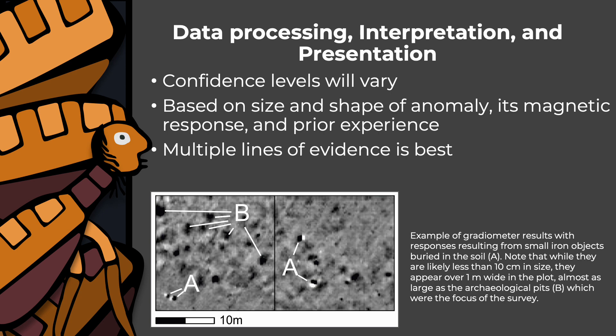Interpretation of geophysics results also inevitably includes different levels of confidence. For example, an archaeologist might assign a 70% confidence level that graves exist in a location, depending on how clear the results are. This will be based on numerous factors such as shape and size of anomaly, its magnetic response, and prior experience. This is where having other sources of evidence, such as other remote sensing techniques or survivor testimony, is beneficial, as multiple lines of evidence that all point in the same direction will provide more certainty. The survey report should make a clear distinction between different levels of confidence and evidence, including inferences based on scientifically demonstrable criteria from those arising from informed speculation based on prior experience.